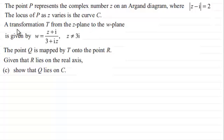Now we've got a transformation T from the Z plane to the W plane, given by W equals Z plus i, all divided by 3 plus iZ, where Z does not equal 3i. The point Q is mapped by T onto the point R. Given that R lies on the real axis, in this part we've got to show that Q lies on the curve C.